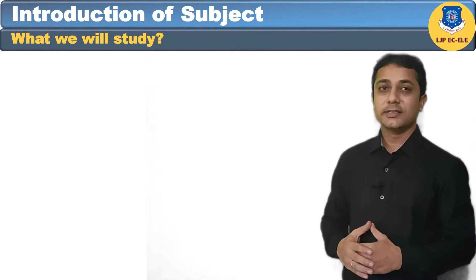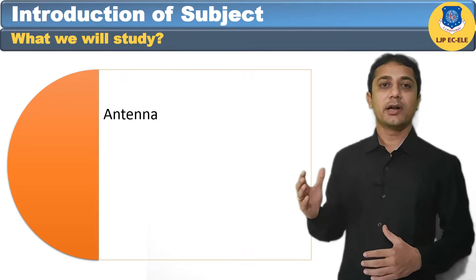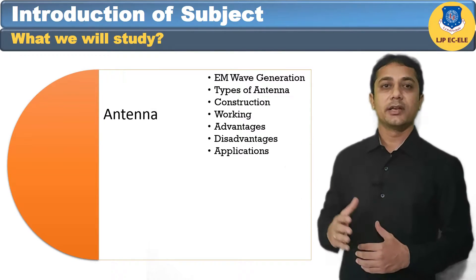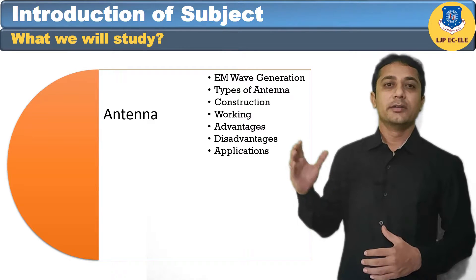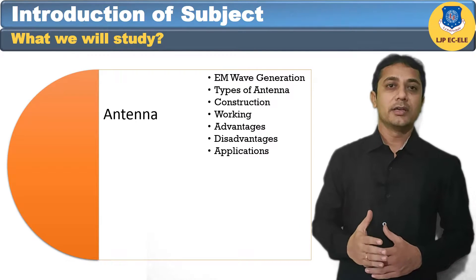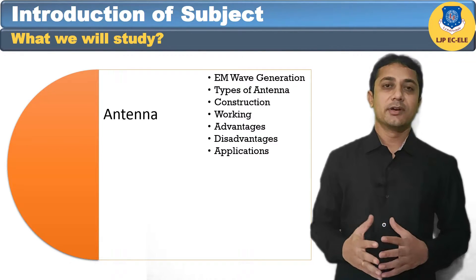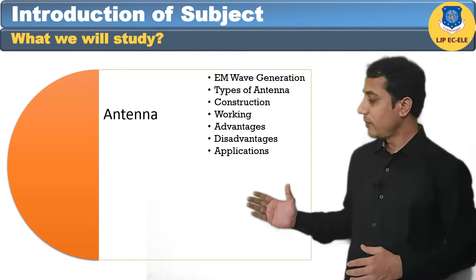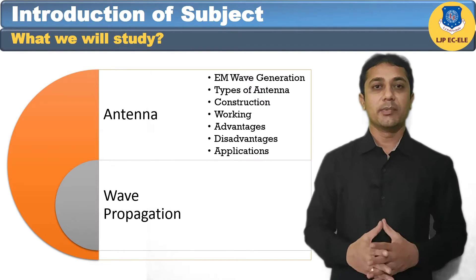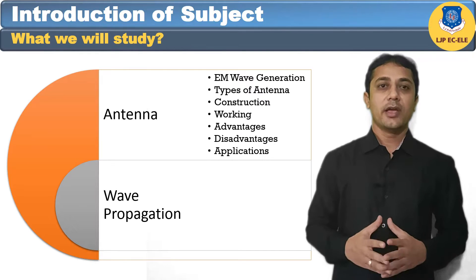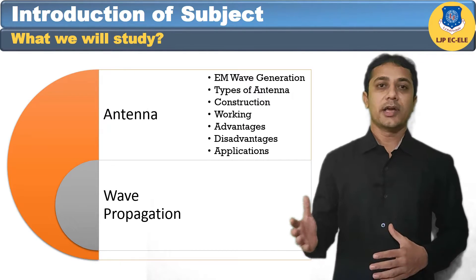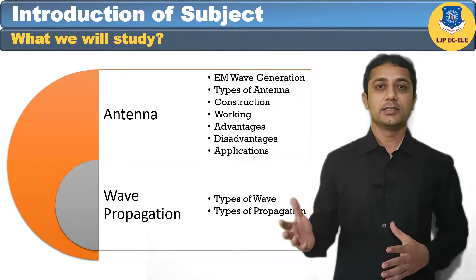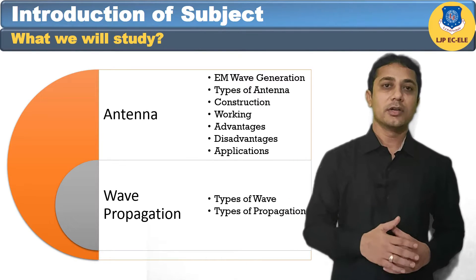First, the antenna part. In the antenna part, we will study about EM wave generation, types of antenna, its construction, working, advantages, disadvantages, and applications. In the wave propagation part, we will study about the types of wave and the types of propagation — that means how the wave propagates, either in space or in the ground.